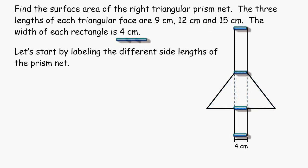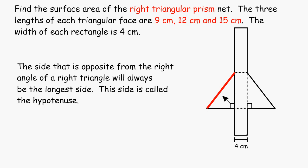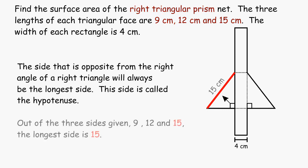To solve this problem, we are going to begin by labeling the different side lengths of the prism's net. One thing that can get us pointed in the right direction is to recognize that each of our triangles are right triangles. This is a helpful hint, because the side length opposite from our right angle will always be the longest side length of any right triangle. This side is called the hypotenuse. We know the three different side lengths are 9, 12, and 15, so our hypotenuse must be 15 centimeters in length.